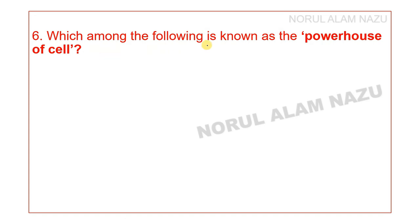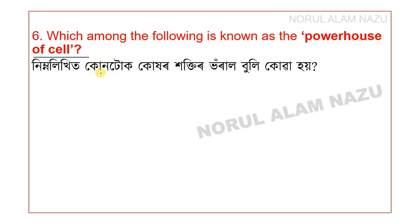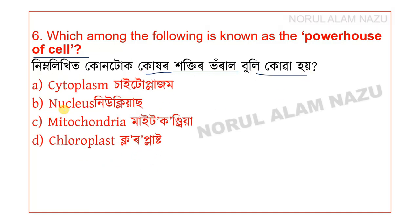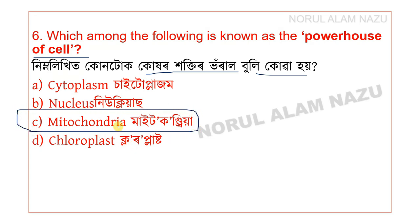Which among the following is known as the powerhouse of the cell? The options are Cytoplasm, Nucleus, Mitochondria, and Chloroplast. The answer is option C — Mitochondria.